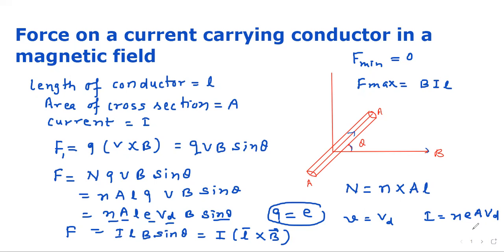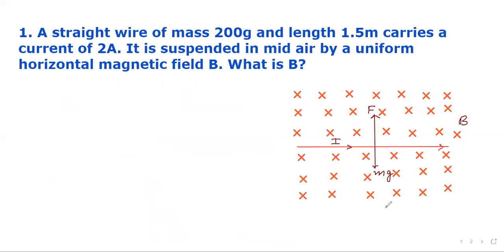Now, let's do some numericals based on this concept. A straight wire of mass 200 grams and length 1.5 meters carries a current of 2 amperes. It is suspended in mid-air by a uniform horizontal magnetic field. Find the value of the magnetic field.